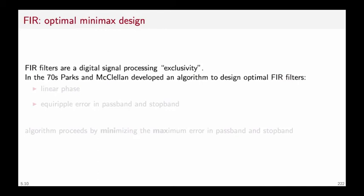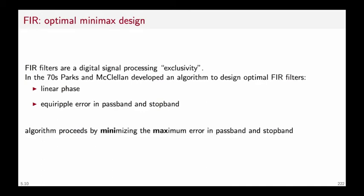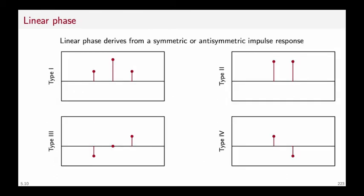Let's now look at FIR design methods. FIR filters are a digital signal processing exclusivity, and so are the algorithms to design them. In the case of FIR filters, the rational transfer function is no longer a ratio of polynomials but just one polynomial in Z. Optimization procedures exist that can achieve optimal results for a given set of specifications. In the 70s, Parks and McClellan developed an algorithm to design optimal FIR filters that yields filters with linear phase and equiripple error both in pass-band and stop-band. The algorithm proceeds by minimizing the maximum error in pass-band and stop-band, and linearity of the phase is achieved by designing an impulse response which is either symmetric or antisymmetric.